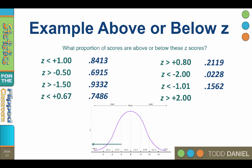And above positive 2.00? 0.0228. Notice that the proportion of scores above a positive 2.00 is exactly the same size as the proportion of scores below a negative 2.00.